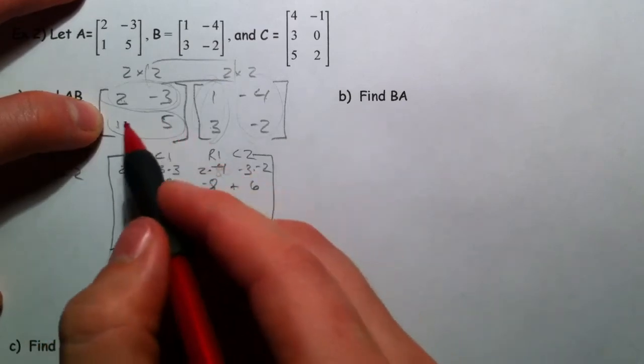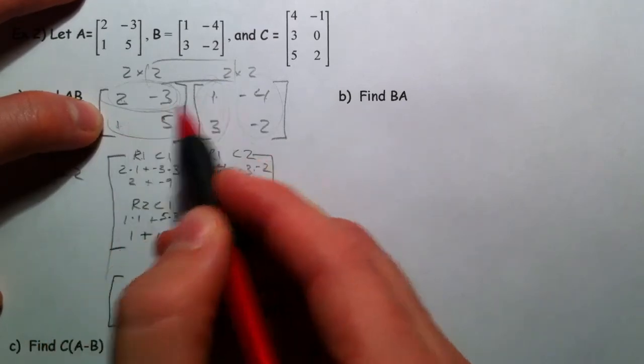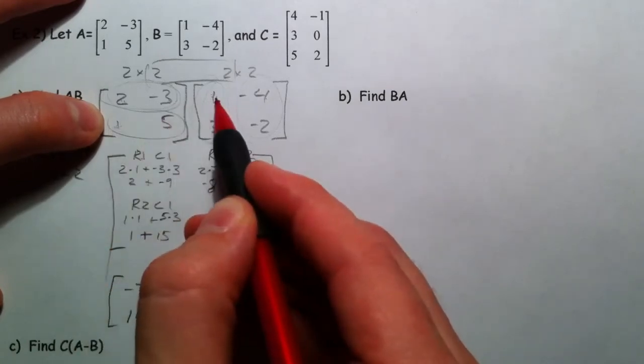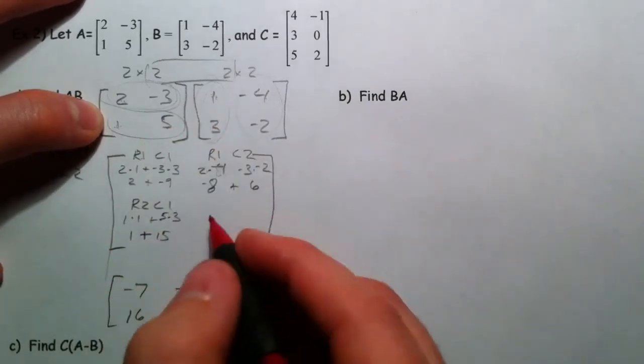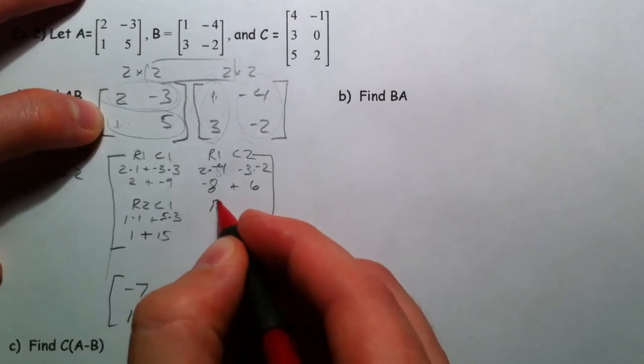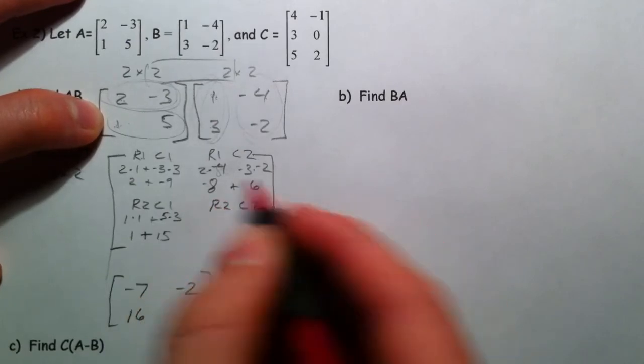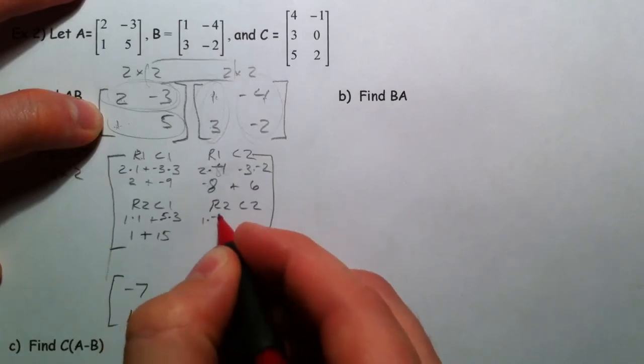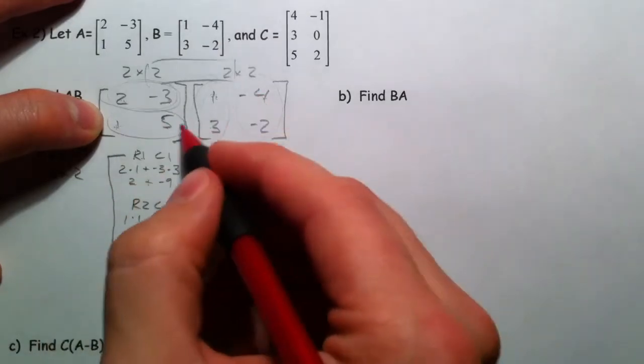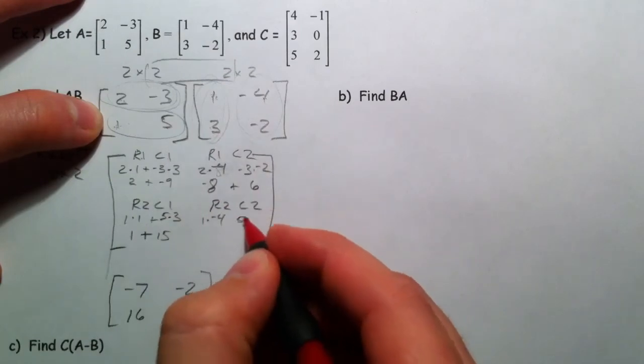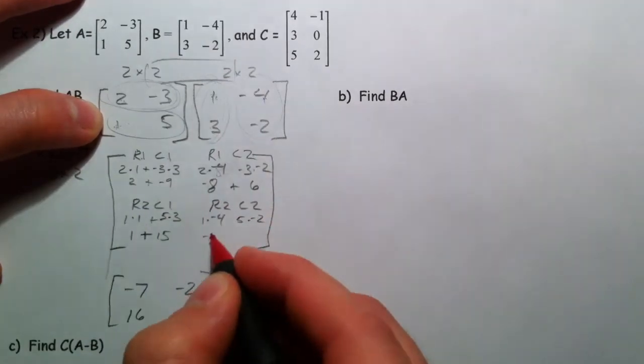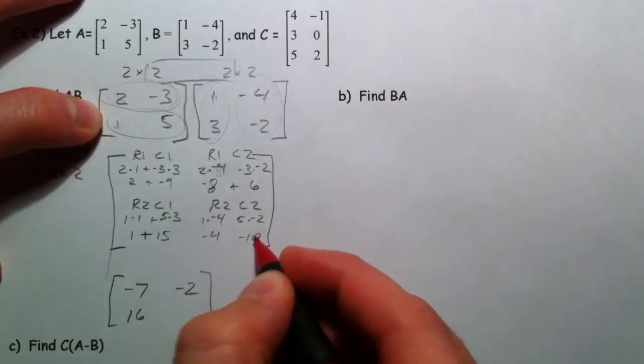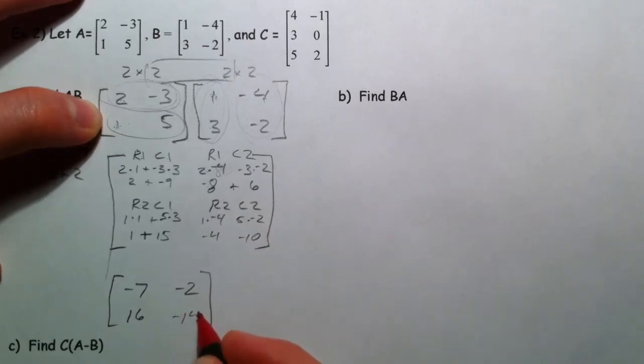Notice what we're doing is the 1 times the 1, the first element of both of those parts. First element of row 1, first element of column 1. And then the second parts. So row 2, column 2. 1 times negative 4 and 5 times negative 2. So you get a negative 4 and a negative 10, and you get negative 14.